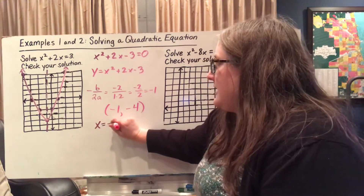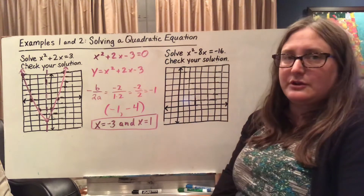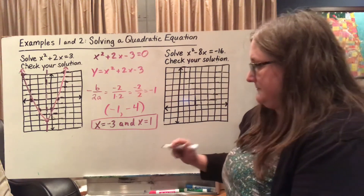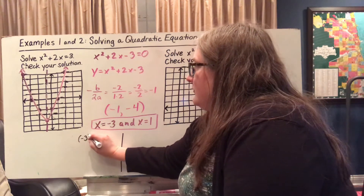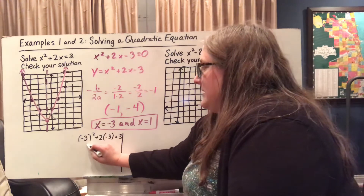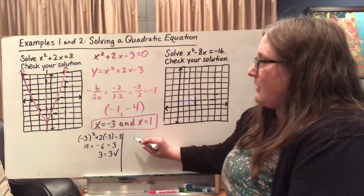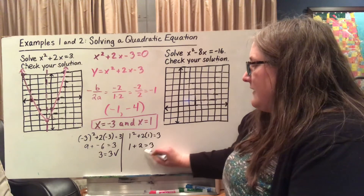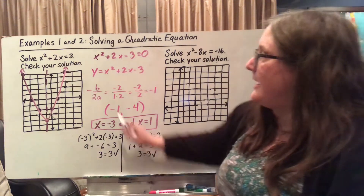So I've got x = -3 and x = 1 as my x-intercepts. So these appear to be my zeros for the equation, my solutions. I'm going to plug them in just to make sure I didn't make any errors. Going back to my original equation: (-3)² + 2(-3) gives me 9 + (-6) = 3. That solution checks out. Let's also try 1: 1² + 2(1) = 1 + 2 = 3. So both solutions check out. Both -3 and 1 are solutions for my quadratic equation.